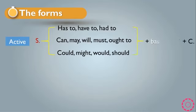After the modal verb, it is followed by a base verb, plus object, plus complement. So the verb in a modal verb sentence is the base form, followed by the object and complement. Now if we change from active to passive, the rule becomes like that.